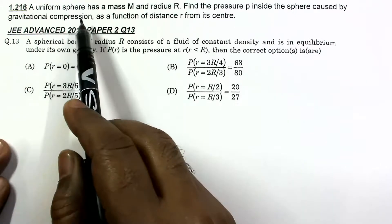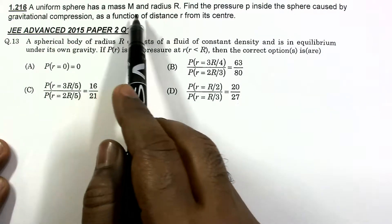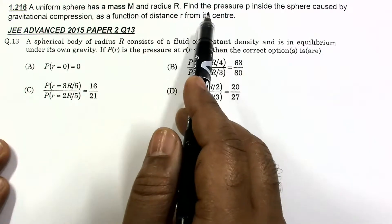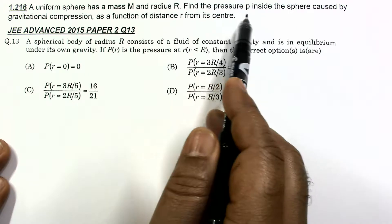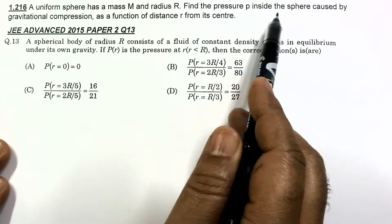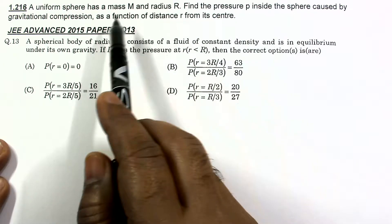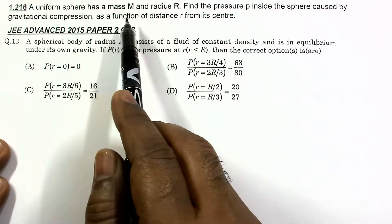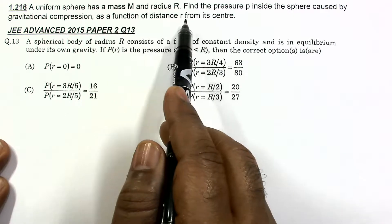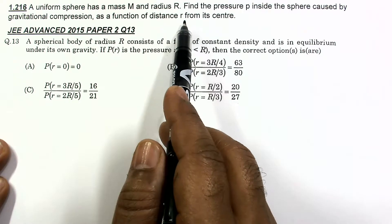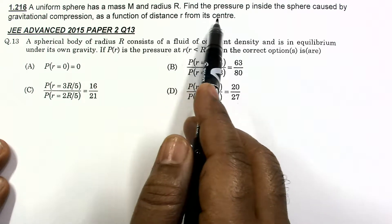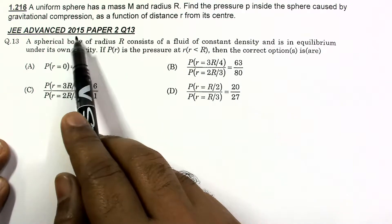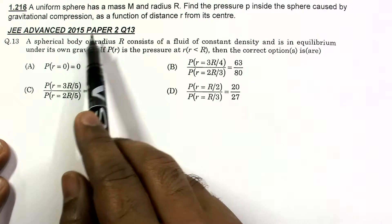In this question, a uniform sphere has a mass and radius R. Find the pressure p inside the sphere caused by gravitational compression as a function of distance r from its center. A similar question is also asked in JEE 2015.